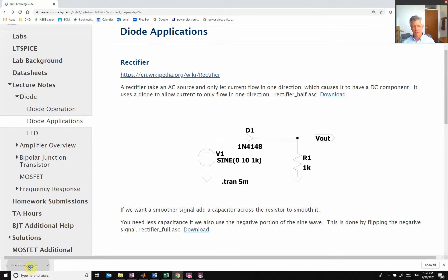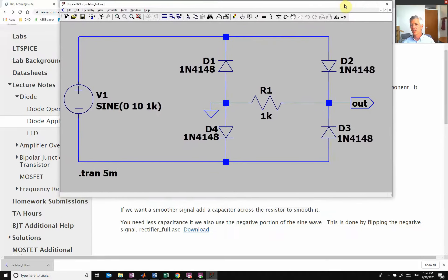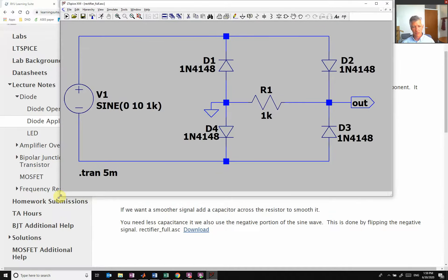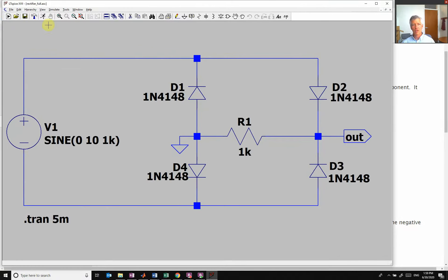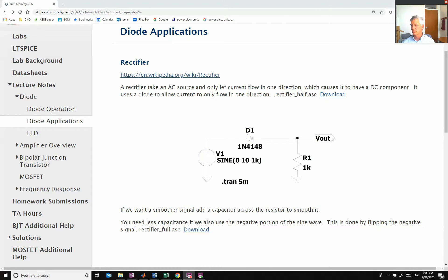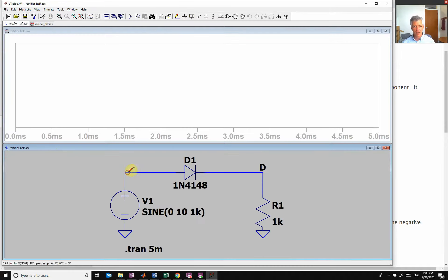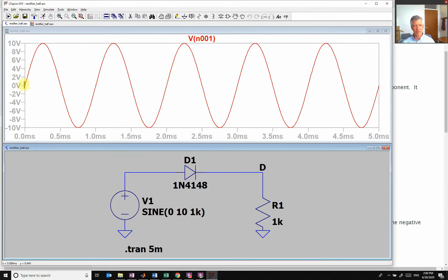So let's look at our simple circuit here. So here is our basic circuit. If I run this and look at the voltage right here, here is my sine wave. So it's going from 0 to 10 and negative back and forth.